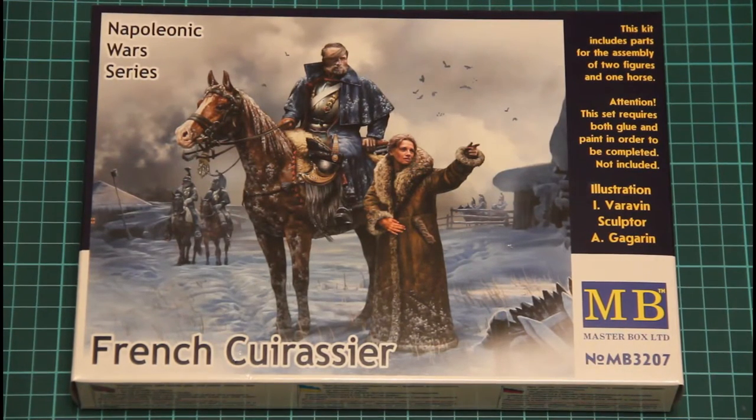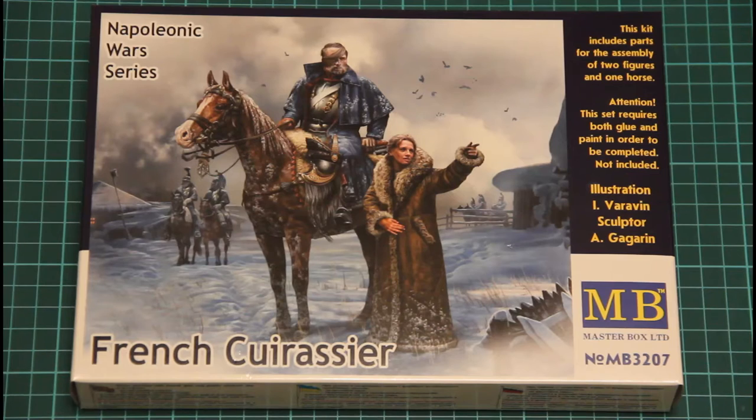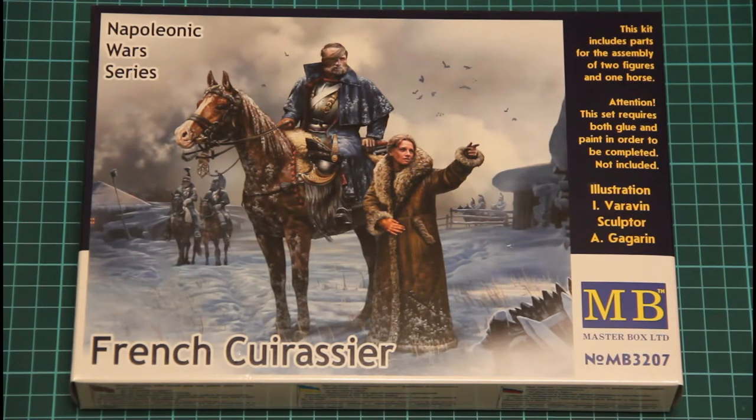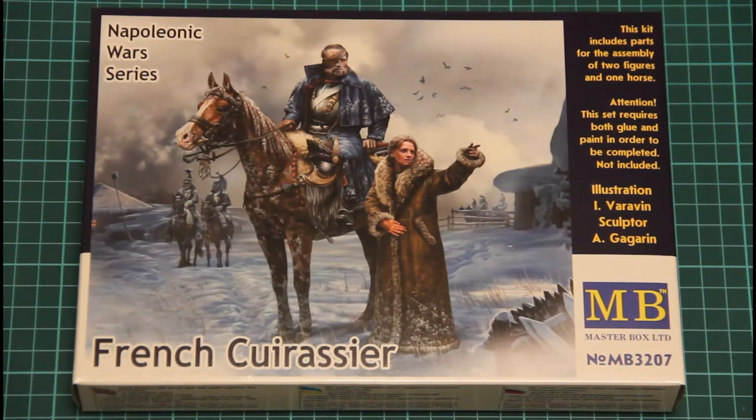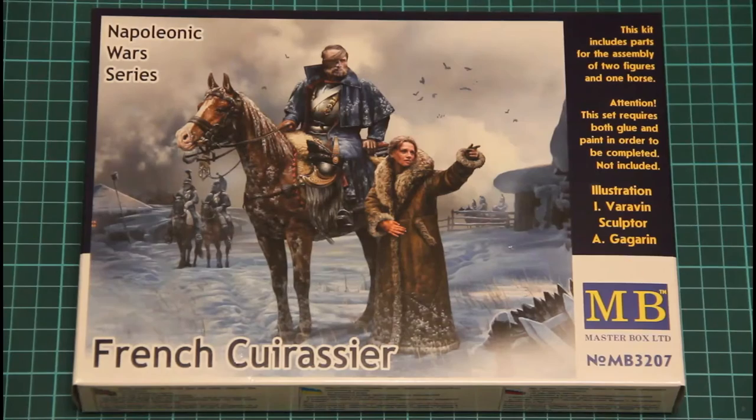Hello everyone! Today we have a new plastic kit from Ukrainian company Master Box. As you can see, this time they decided to replicate a quite unusual topic for them - the Napoleonic Wars series. We have a French cuirassier in 1:32 scale.